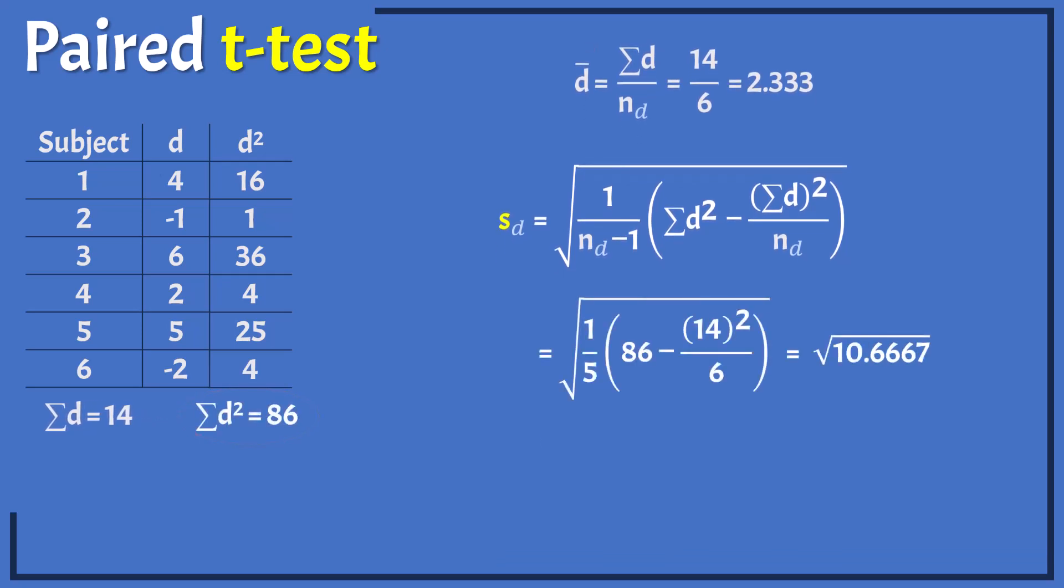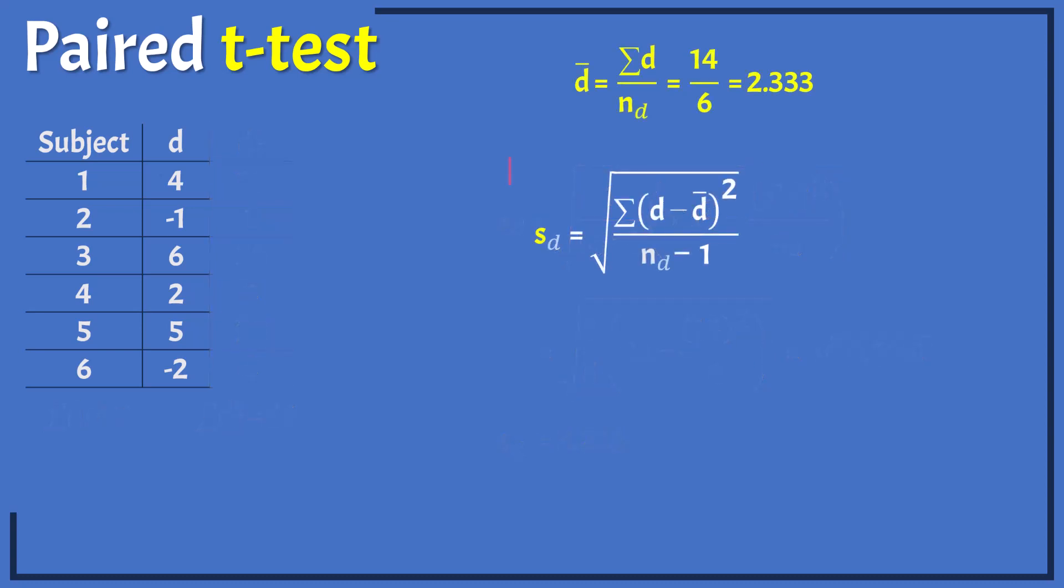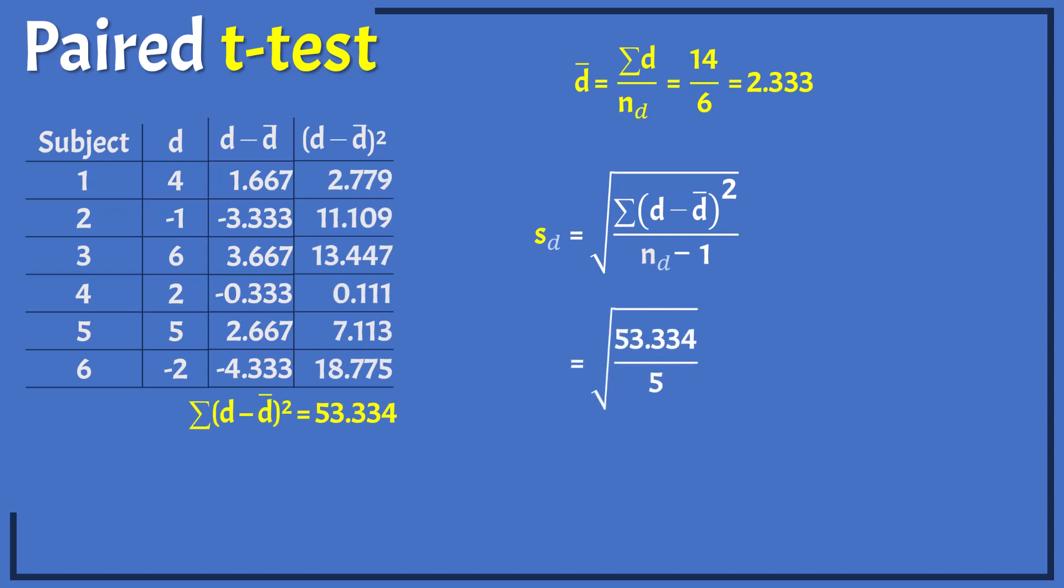The standard deviation is thus 3.266. We can also use this formula to calculate the standard deviation by first calculating the deviations from the mean, then summing the square deviations, which results in the same standard deviation as obtained before.